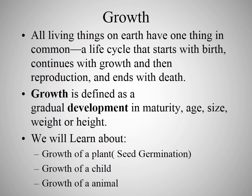Growth is defined as a gradual development in maturity, age, size, weight, or height. As we grow older, our age increases, our size increases, and our weight or height also increases. In this chapter we will learn about the growth of a plant — that is seed germination, how a seed becomes a plant — the growth of a child, how a child becomes an adult, and the growth of an animal, how a baby animal becomes an adult animal.